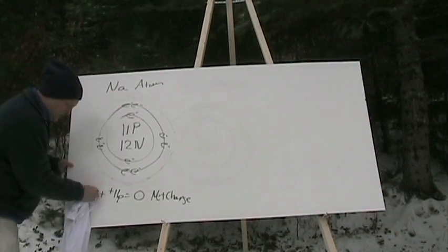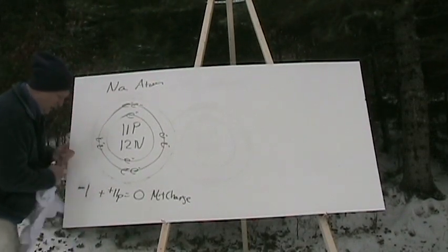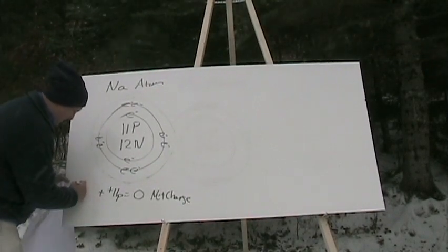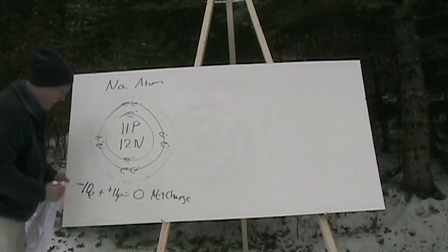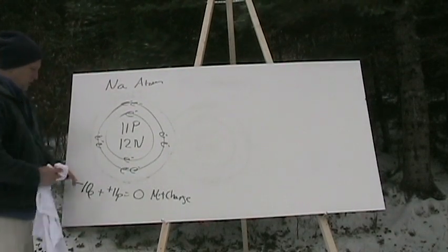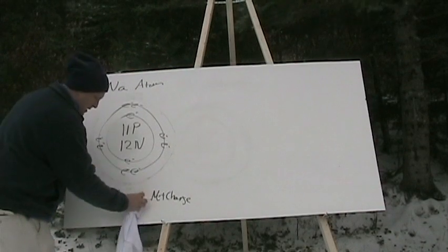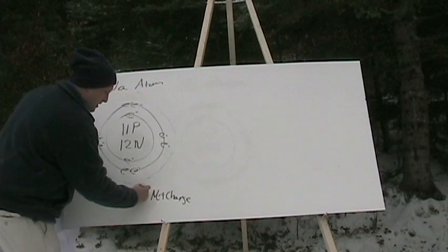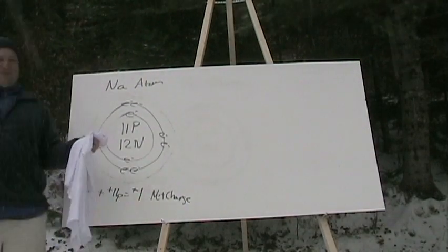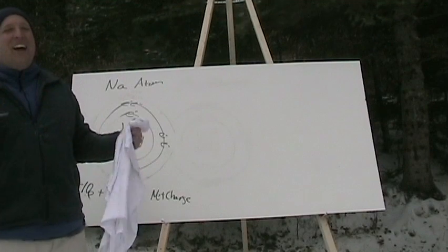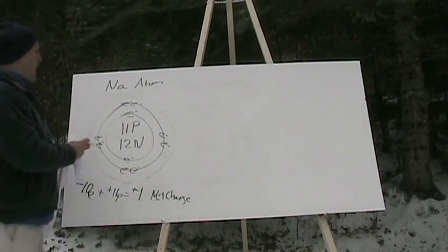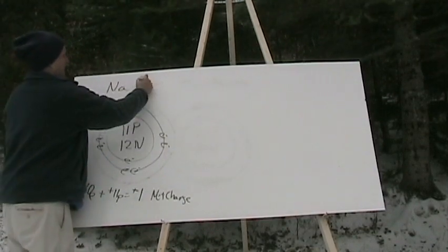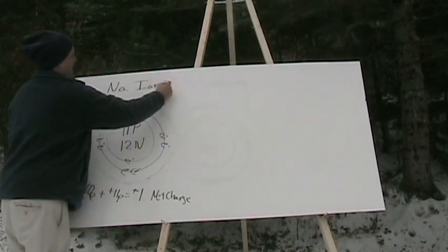So now we have ten electrons total, and this is going to change our overall charge. Negative ten electrons plus positive eleven protons equals a positive one net charge. The periodic table actually blew away! Alright, so that's our sodium atom changed into an ion — it is no longer an atom. It is now an ion.